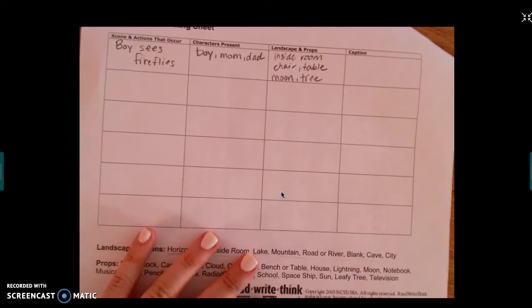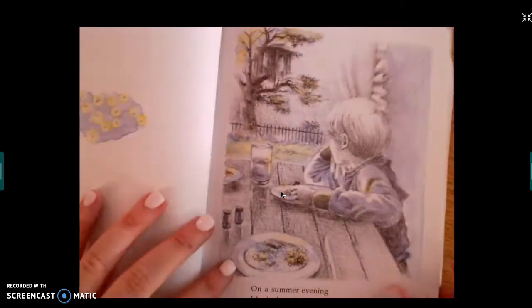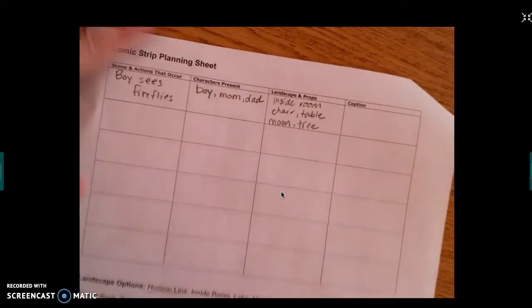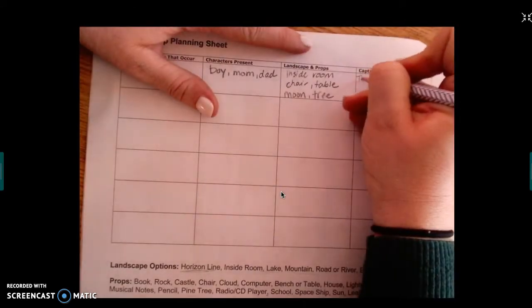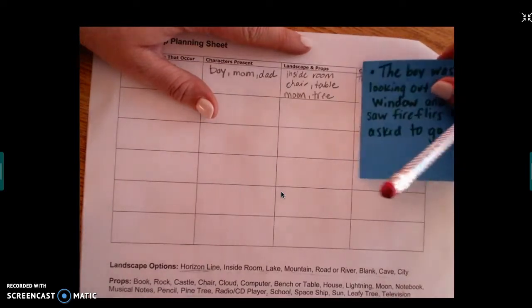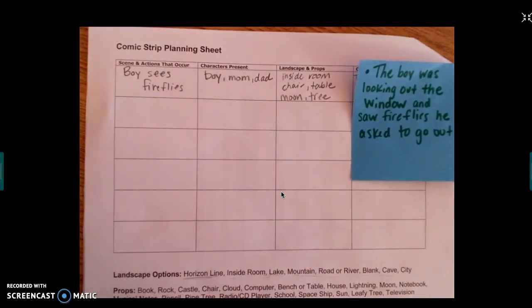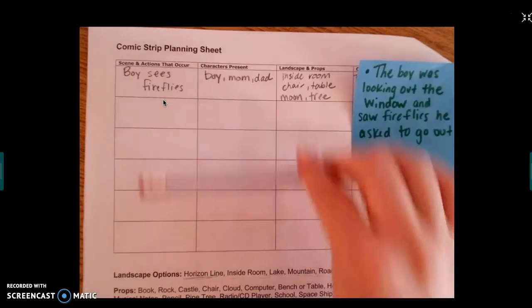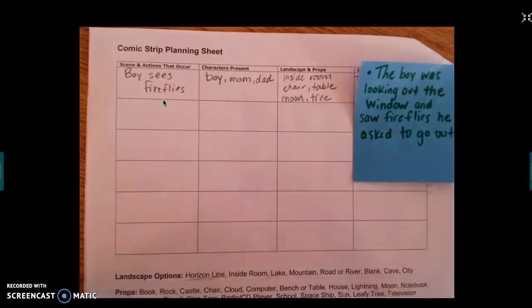Then I have to come up with a caption. This is a sentence that you're actually going to type. So I'm going to summarize what's happening in this scene. Remember he's looking out the window. He sees the fireflies. He asks his parents if he can go out. So I'm going to actually write the scene. So this will be really easy when I go to do this. The boy was looking out the window. I've already written it here. You guys are actually going to write it but I didn't want to waste your time. So the boy was looking out the window and saw fireflies and he asked to go out.